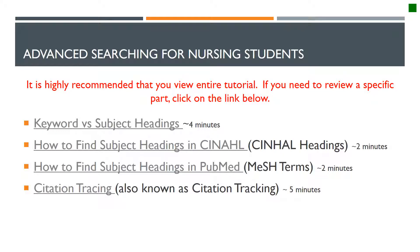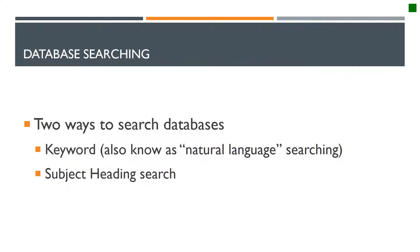It is highly recommended that you view the entire tutorial. You can jump back and forth to review parts of the tutorial by clicking on the hyperlinks below. Whenever you are doing database searching, there are two ways to search the databases: through a keyword search, which is also known as a natural language search, or through a subject heading search. We are going to review these two ways to search the databases.